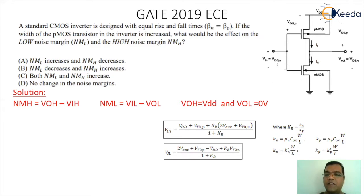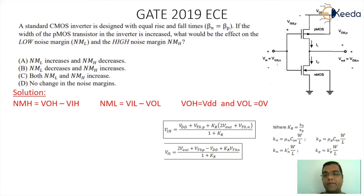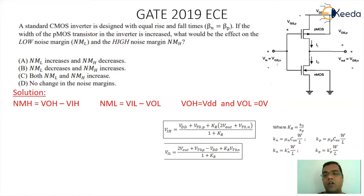Whereas VIL equals (2×VOUT + VTOP − VDD + KR×VTON) divided by (1 + KR). KR is the ratio of KN by KP, which as per the question is βN by βP. KN equals µN×Cox×(W/L) and KP equals µP×Cox×(W/L). Now we need to understand what will happen if the width of the PMOS is increased.